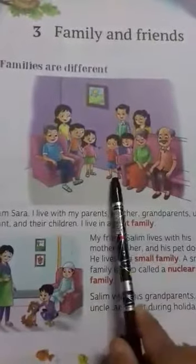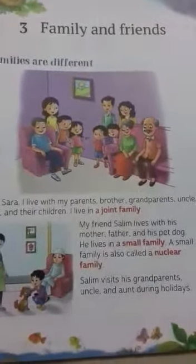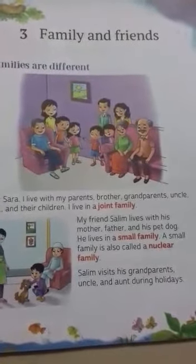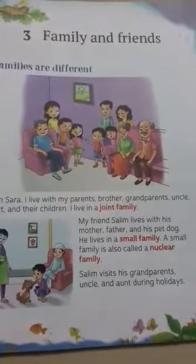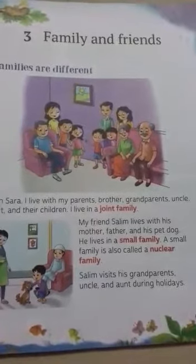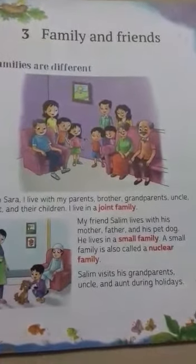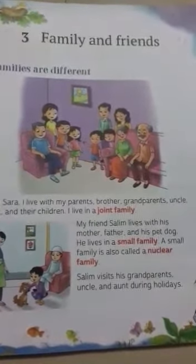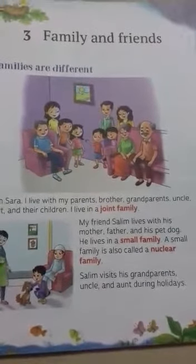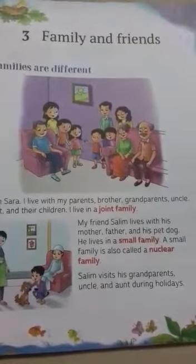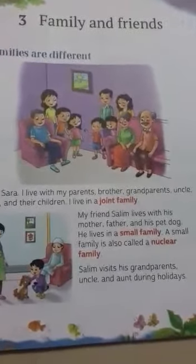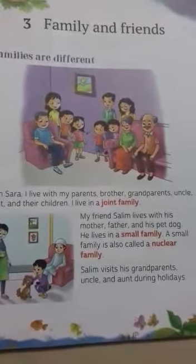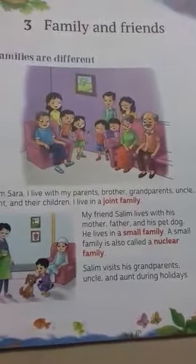As we live in a family, there are so many people — they are your family members. Now we will learn the names of our family members. The brother of our father or mother is our uncle. The sister of our father or mother is our aunt. And the children of our uncle or aunt are our cousins. Now it's time to know about siblings. The children of the same parents are siblings. In short, siblings are your own brother or sister, and they are related to you by blood.